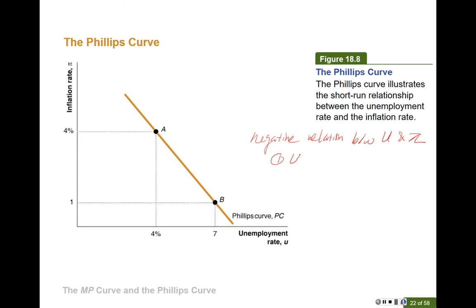Let's first look at what happens if the unemployment rate increases — moving to 7% on the graph. When the unemployment rate is high, what do you think happens to wages in the labor market? When unemployment rate is high, many people lose their jobs. In order to get a job, workers will ask for a lower level of wage, or we can say they are willing to accept lower wages in order to work.